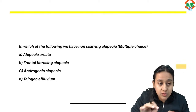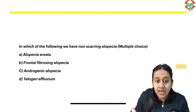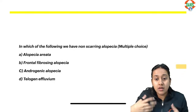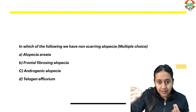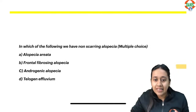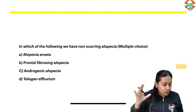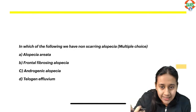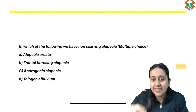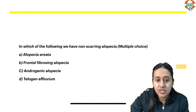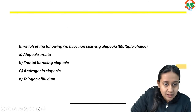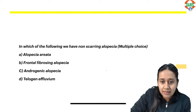The first question was: in which of the following do we have non-scarring type of alopecia? Students told me it was a multiple choice question with options like one, two, and three being positive. This is a very simple question and is a direct repeat from the INICET May 2023 exam, with a very similar question also appearing in INICET November 2022.